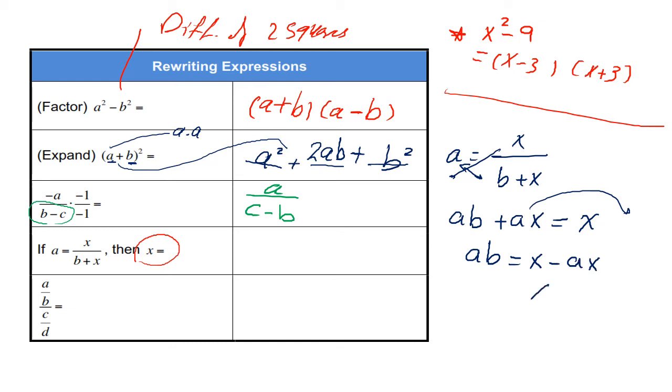Then you are taking X as a highest common factor. Then you are going to divide both terms by 1 minus A, so it's AB over 1 minus A. So this one is a little bit difficult.